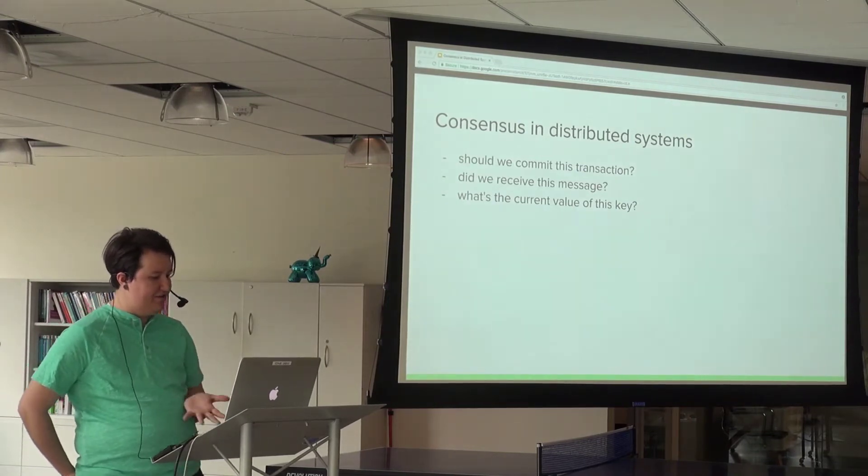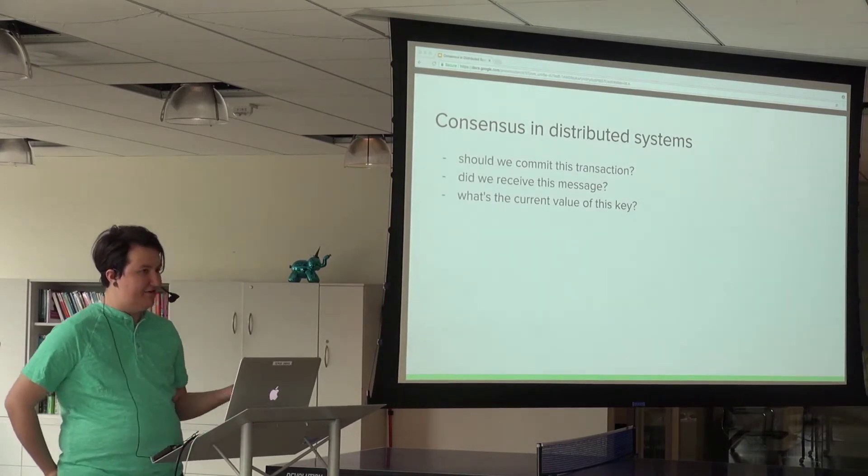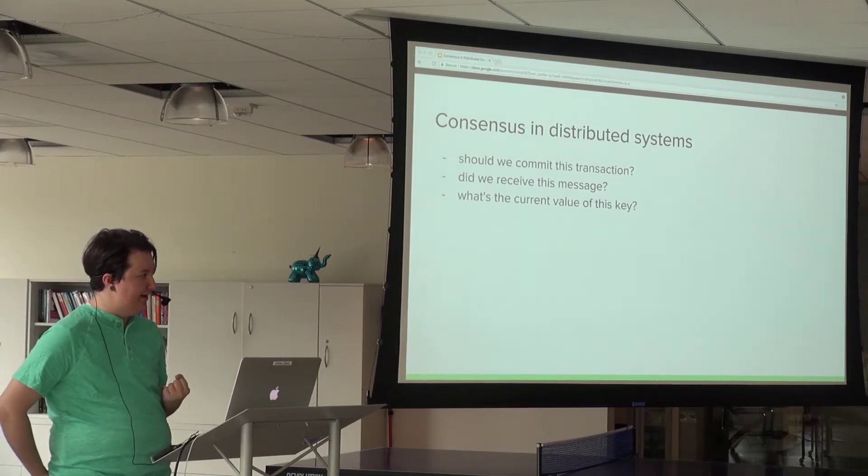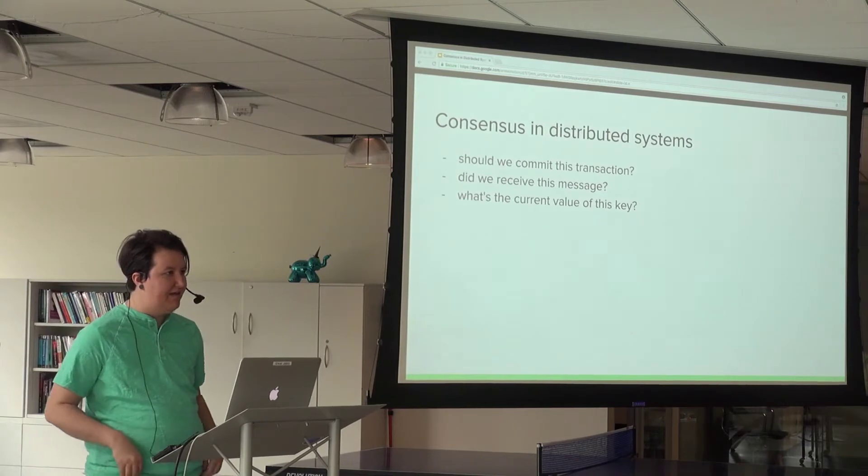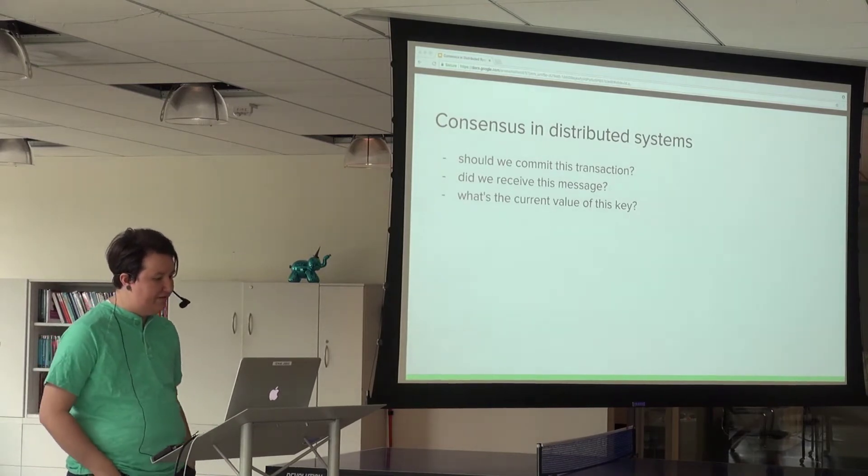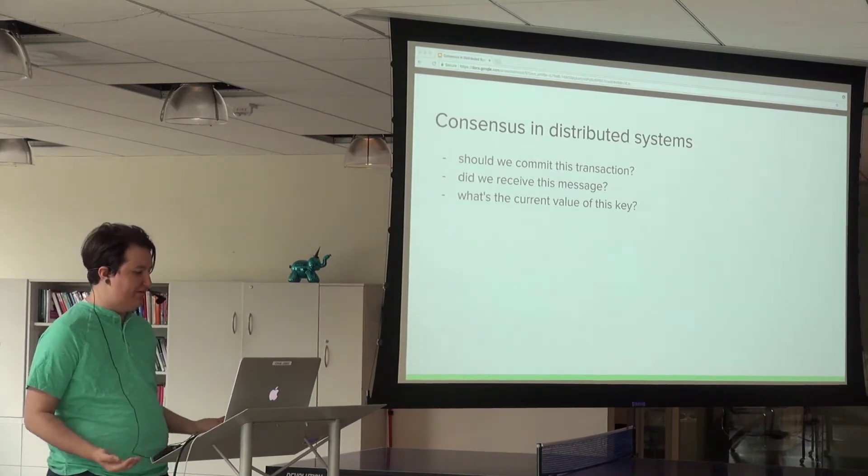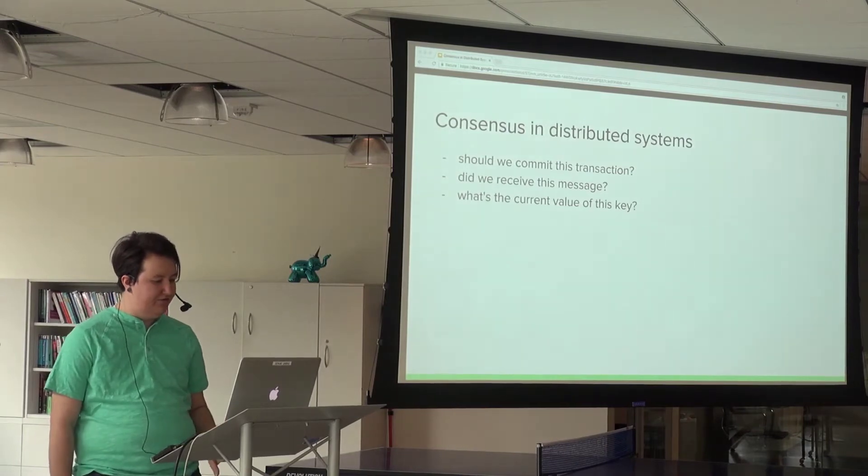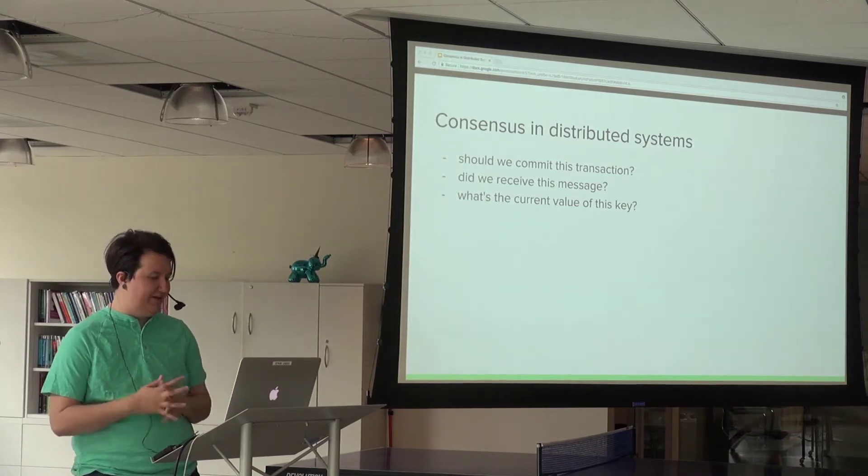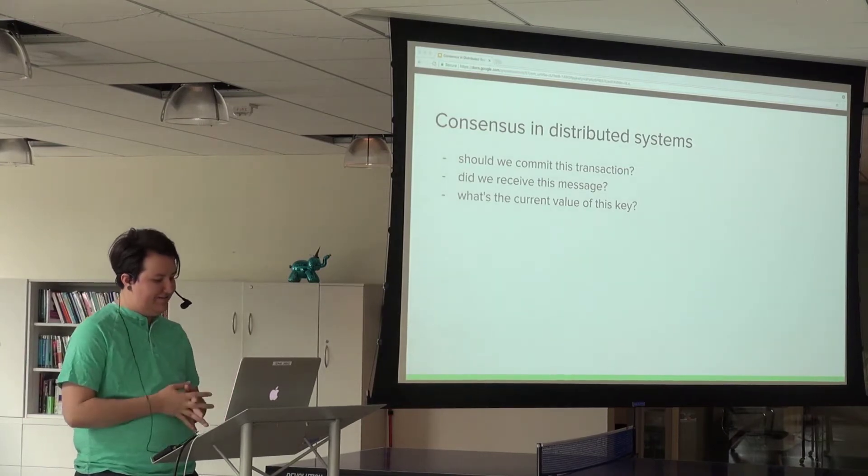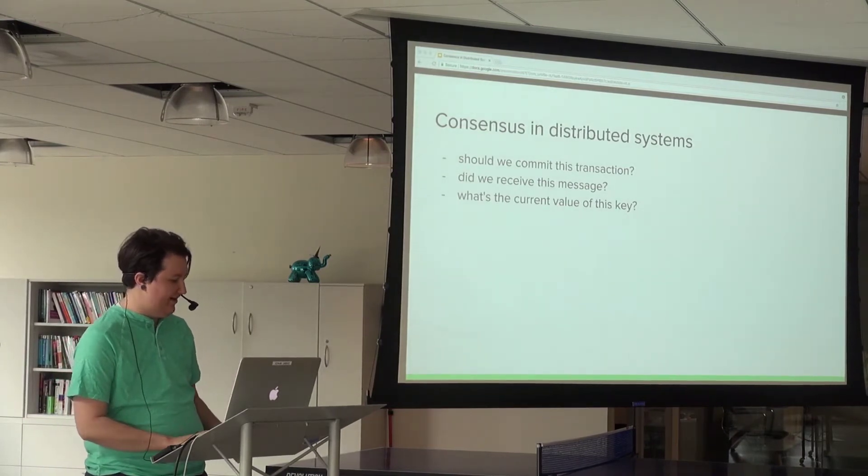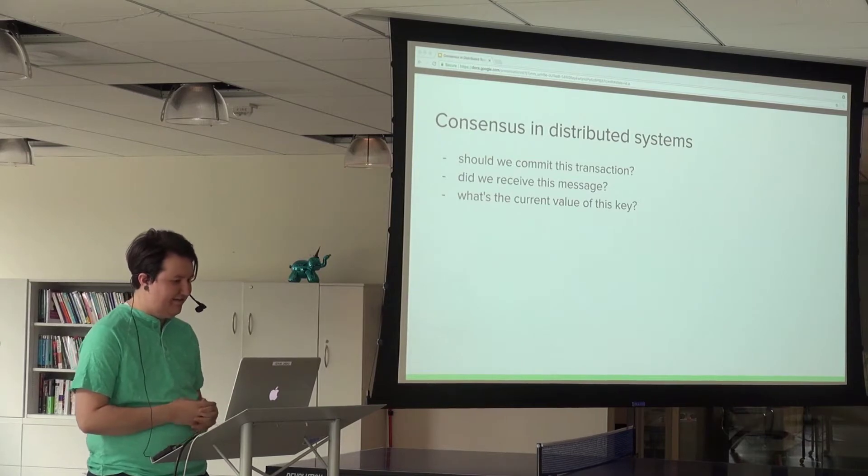We need some idea of how to achieve consensus in a distributed system. Because these systems have multiple nodes, we have things like network latency, network failures, network partitions, and individual nodes could go down. We want to develop some algorithm that will allow us to always reach consensus across the entire distributed system.